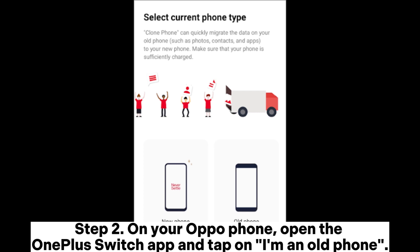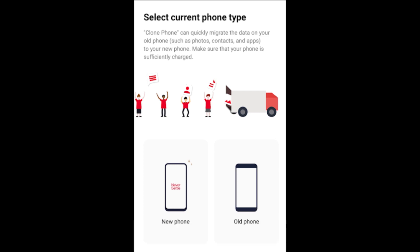Step 2: On your OPPO phone, open the OnePlus Switch app and tap on 'I'm an old phone.'